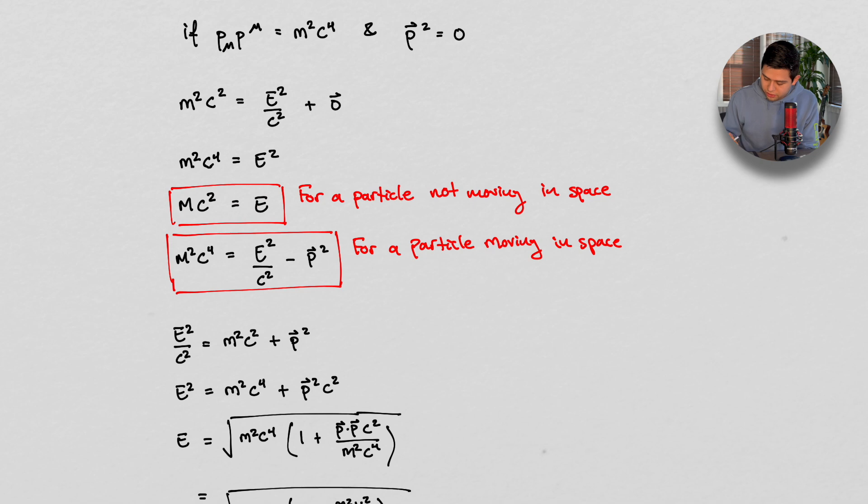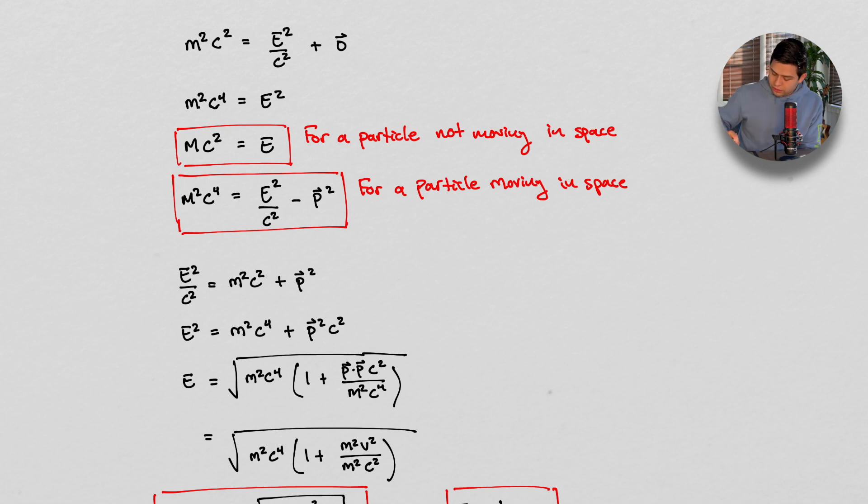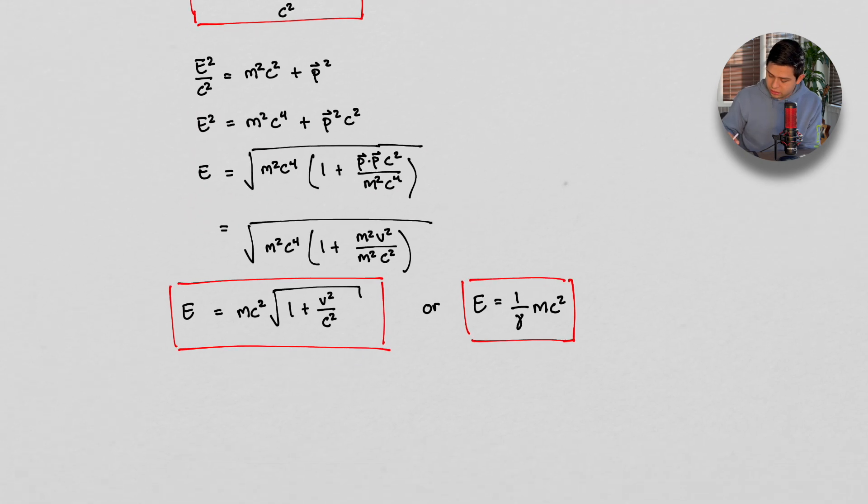And this is how we recover our MC squared. So our E equals MC squared is for a particle that's not moving in space. For a particle that is moving in space, however, we do need that momentum component there. And so we get this for a particle moving in space. And what we can do is we can take the square root, we can do some algebraic manipulation. We can take the square root of both sides.